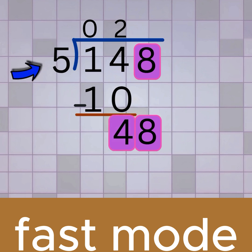how many times does 5 go into 48? That's 9 times, because 5 times 9 is 45. We write 9 on top, above the 8. Multiply, 9 times 5 is 45.